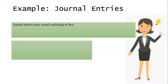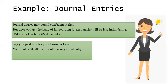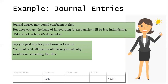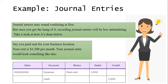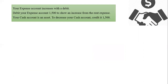Here are example journal entries. Journal entries may sound confusing at first, but once you get the hang of it, recording journal entries will be less intimidating. Say you paid rent for your business location — your rent is $1,500 per month. Your journal entry would have your date, account as 'Expense,' notes as 'Paid rent,' and debit of $1,500. Below that, under account you have 'Cash,' credit $1,500. Your expense account increases with the debit — debit your expense account $1,500 to show an increase from the rent expense. Your cash account is an asset; to decrease your cash account, credit it $1,500.